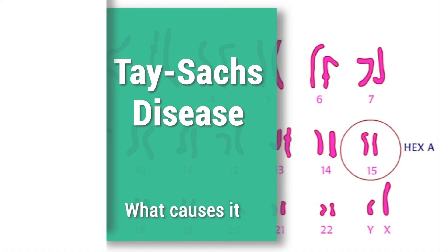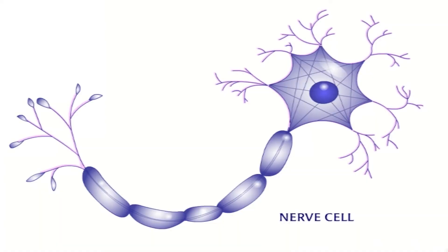Tay-Sachs is an inherited disease in which the nerve cells deteriorate and eventually die.